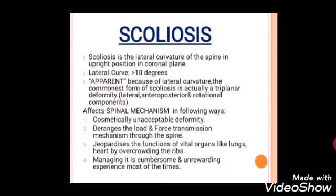So what is scoliosis? Scoliosis is basically the lateral curvature of the spine in the upright position in the coronal plane. When we divide the body into anterior and posterior halves, the lateral curvature seen is known as scoliosis, and when the curve is greater than 10 degrees, we classify it as scoliosis. The commonest form is always a triplanar deformity — the vertebral bones may rotate, laterally deviate, and move anteroposteriorly.